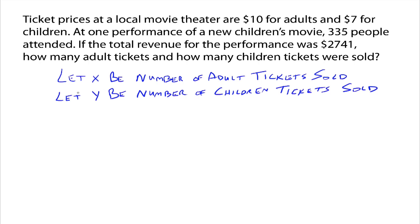We know that if X is the number of adult tickets sold and Y is the number of children tickets sold to this particular performance, and we know that 335 people attended, then we can get an equation. We know that X plus Y has to equal 335 — that's the total. Adult tickets plus children tickets equals the total of 335 tickets sold. So there's one equation, we just have one more to go.